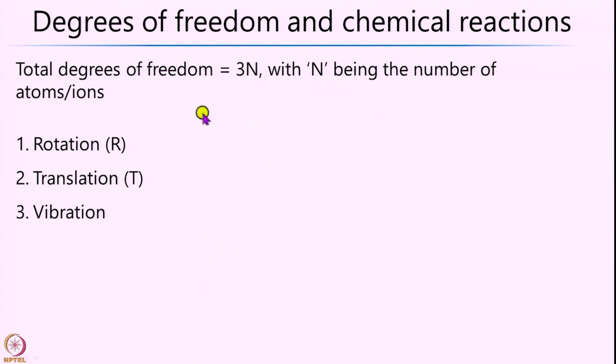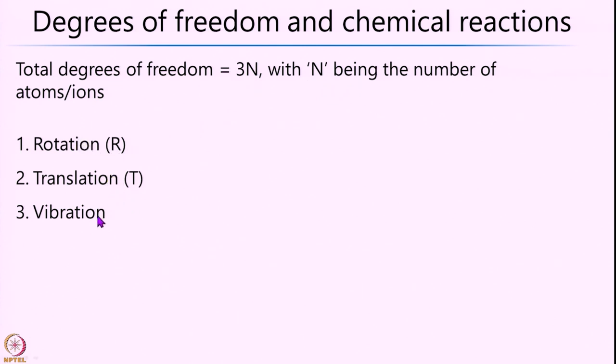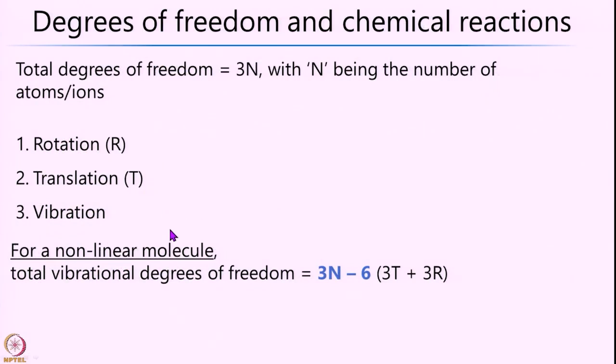These 3n degrees of freedom can be further divided into rotational, translational, and vibrational degrees of freedom. For a non-linear molecule such as water or ammonia, the total number of vibrational degrees of freedom is given by 3n − 6. The number 6 comes because the molecule has 3 translational degrees of freedom — it can translate along x, y, and z — and 3 rotational degrees of freedom along the three axes.